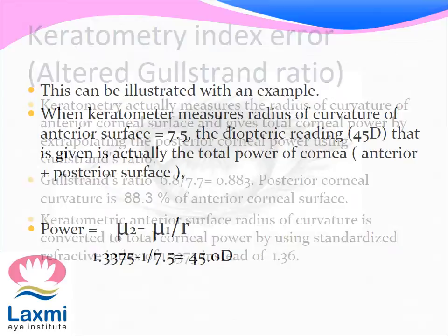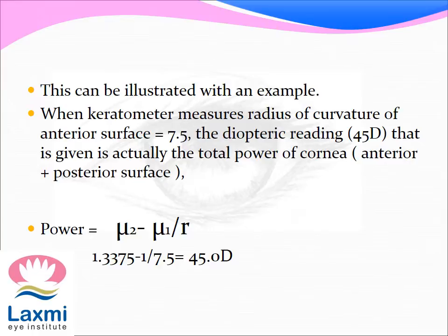This can be illustrated with an example. When the keratometer measures a radius of curvature of the anterior surface as 7.5 mm, the diopter reading — i.e., 45 diopters — is actually the total corneal power, including both anterior and posterior surfaces.